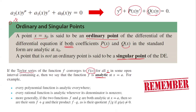All polynomial functions are well-behaved — they're analytic everywhere. Every rational function is analytic where its denominator is non-zero. In general, if you have two functions f and g that are both analytic at a, then their addition, multiplication, and division (given that the denominator is not zero) is also analytic.